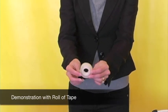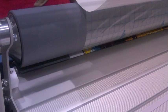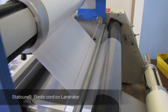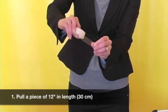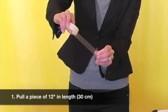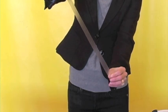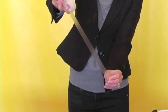With this roll of tape, you can show your customers how static electricity is causing problems on their machines and materials. You begin by pulling a piece of tape off the roll. Pull a piece with a length of approximately 12 inches or 30 centimeters.